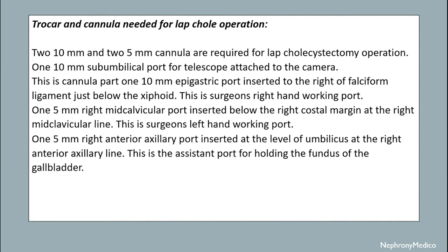Trocars and cannulas needed for laparoscopic operation: two 10 mm and two 5 mm cannulas are required. One 10 mm sub-umbilical port is for the telescope attached to the camera. One 10 mm epigastric port is inserted to the right of the falciform ligament just below the xiphoid — this is the surgeon's right hand working port. One 5 mm right mid-clavicular port is inserted below the right costal margin — this is the surgeon's left hand working port. One 5 mm right anterior axillary port is inserted at the level of the umbilicus — this is the assisting port for holding the fundus of the gallbladder.